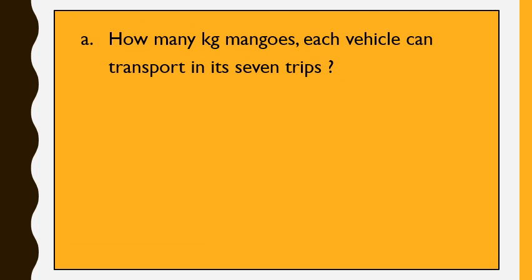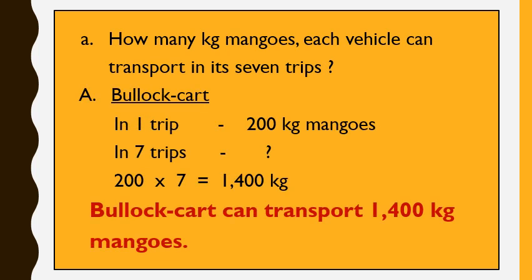The bullock cart can transport 200 kg of mangoes in one trip at a speed of 4 km per hour. Now, we will find how many kg of mangoes each vehicle can transport in 7 trips. In one trip, a bullock cart can transport 200 kg of mangoes. So, in 7 trips, we cross multiply 200 by 7 and divide by 1, giving us 1,400 kg. So, a bullock cart can transport 1,400 kg of mangoes in 7 trips.